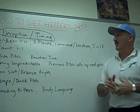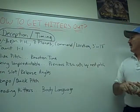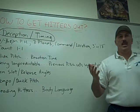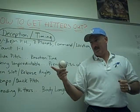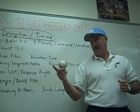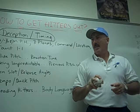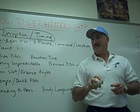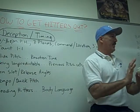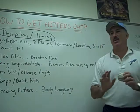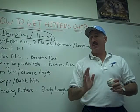To get hitters out, you've got to have deception. You've got to have command and location. What's command? Command is where you want to put the pitch. What's the difference between command and location? Location is where it is as a strike, and command is when it's where you want to put it. That's very, very important. I can get hitters not on time simply by command.